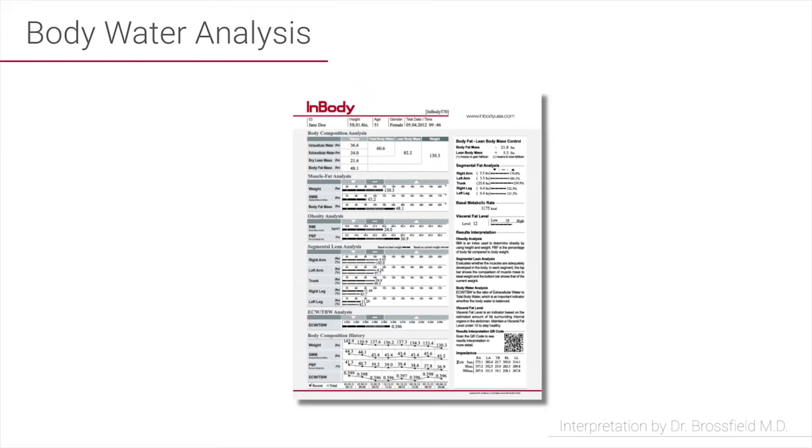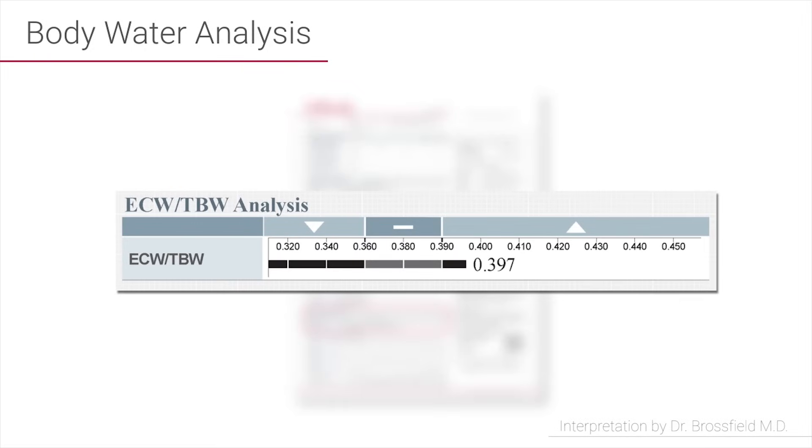Below the lean analysis is a segment that's called ECW/TBW analysis. This is an assessment of your body water, and if this number is particularly high, it means that you have some swelling on the inside or that your cell walls are not as strong as they should be. This is a place where we notice inflammation or body retention of water sometimes when these numbers get elevated.